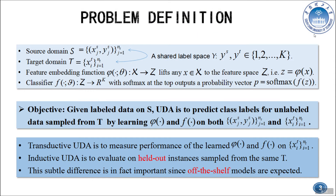Given labeled data on the source domains, unsupervised domain adaptation (UDA) is to predict class labels in the same label space for unlabeled data sampled from the target domain T, by learning the feature embedding function Phi and the classifier F on both source and target training instances. According to the evaluation setting, it can be divided into transductive UDA and inductive UDA.